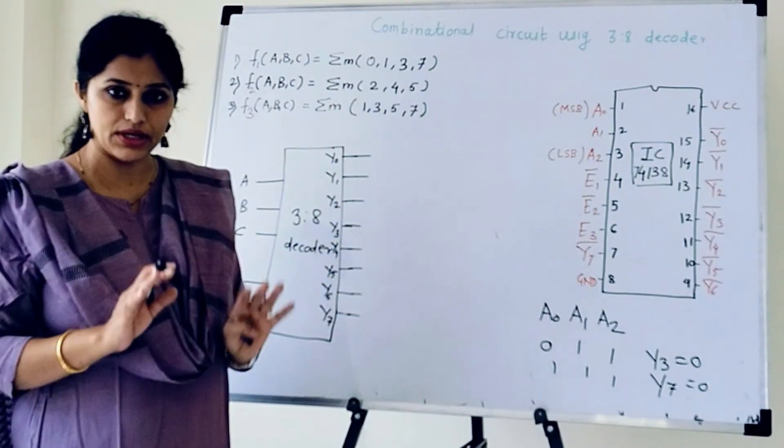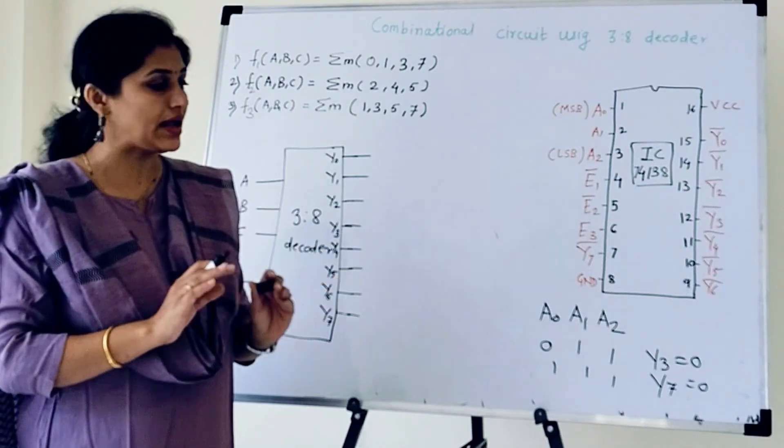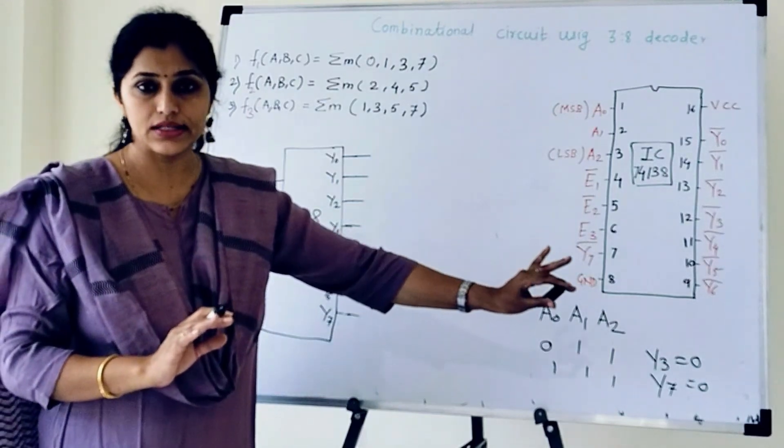Whereas in some decoders they are active high output. It means selected output is 1 and remaining outputs will remain 0.